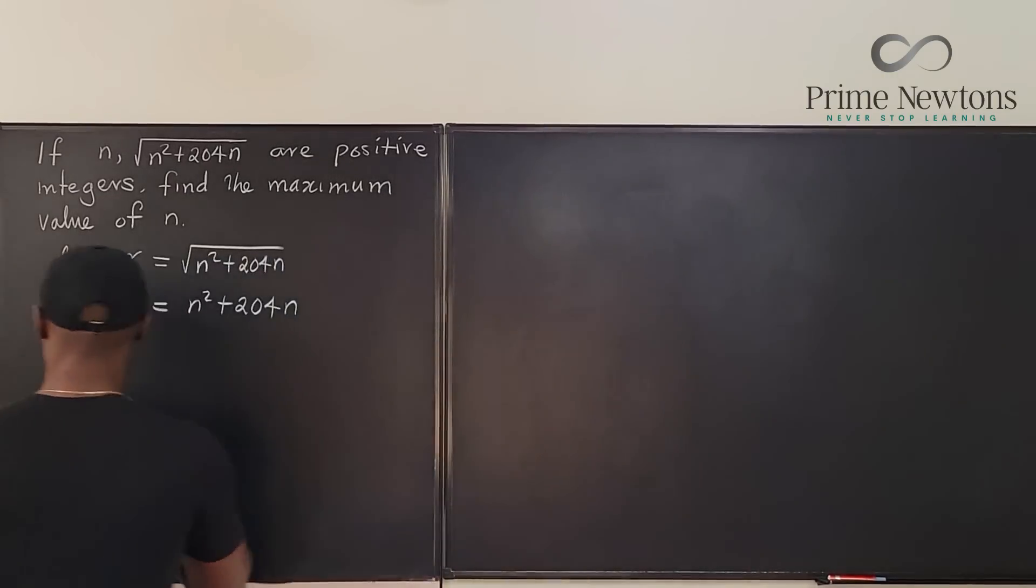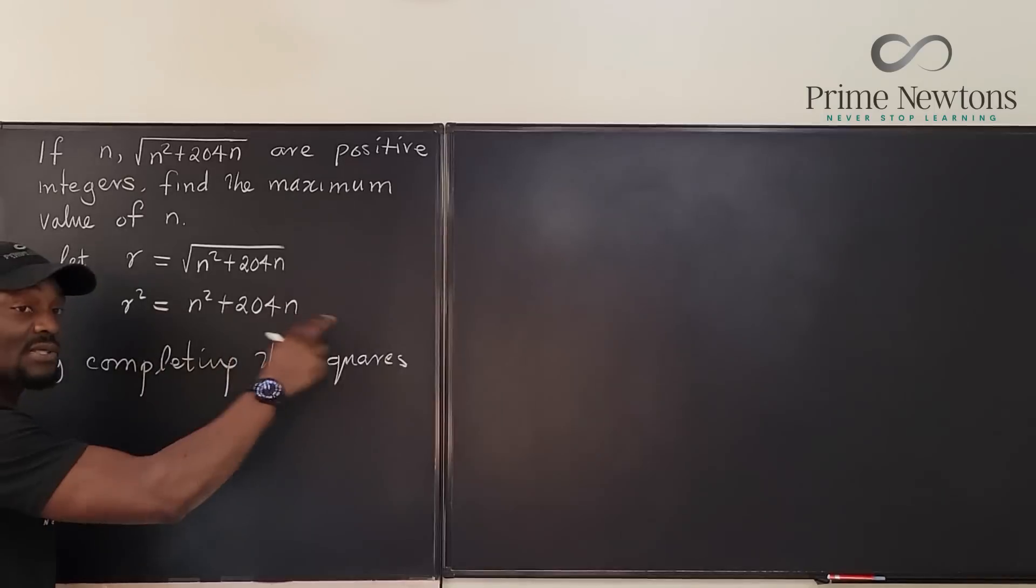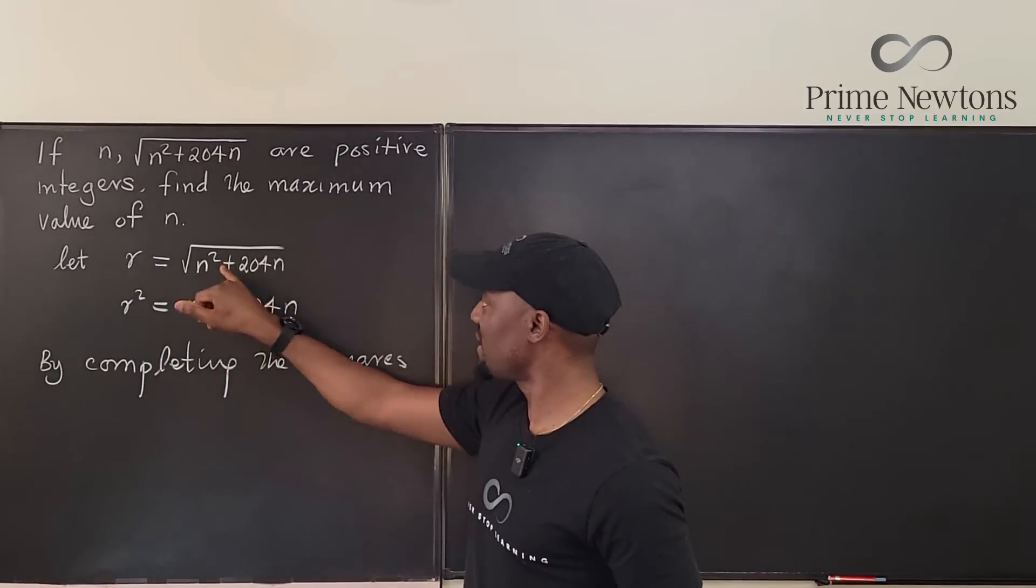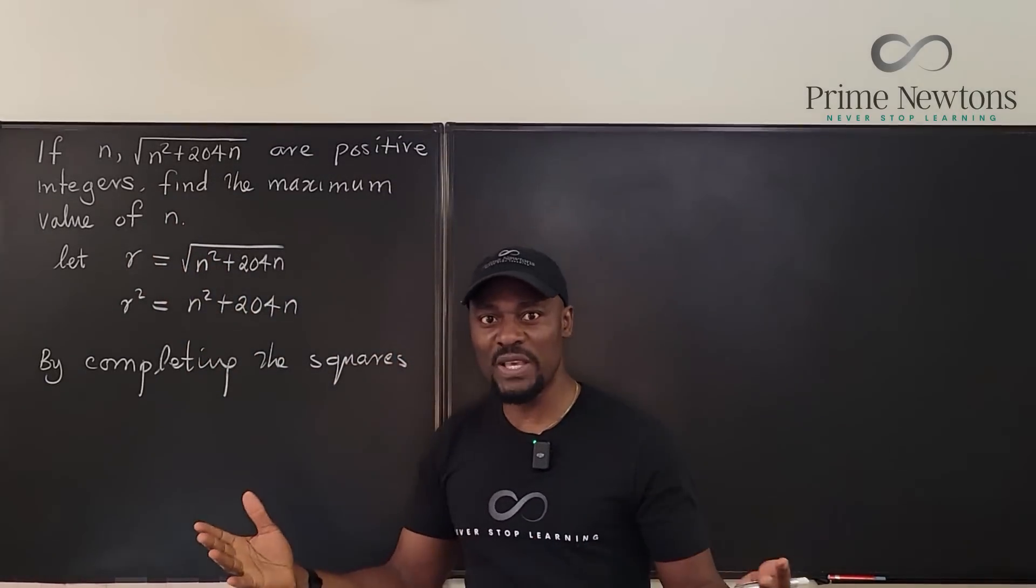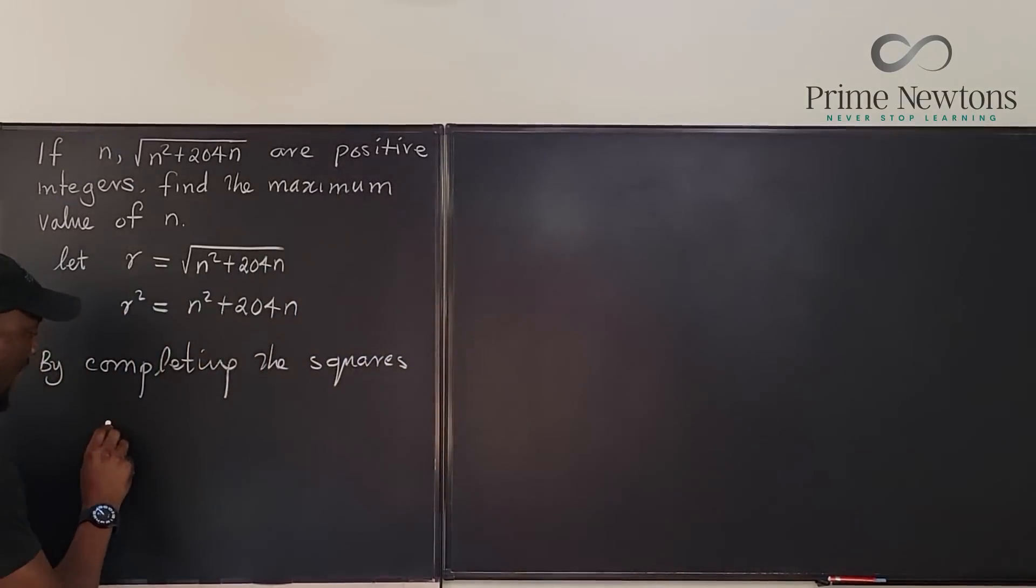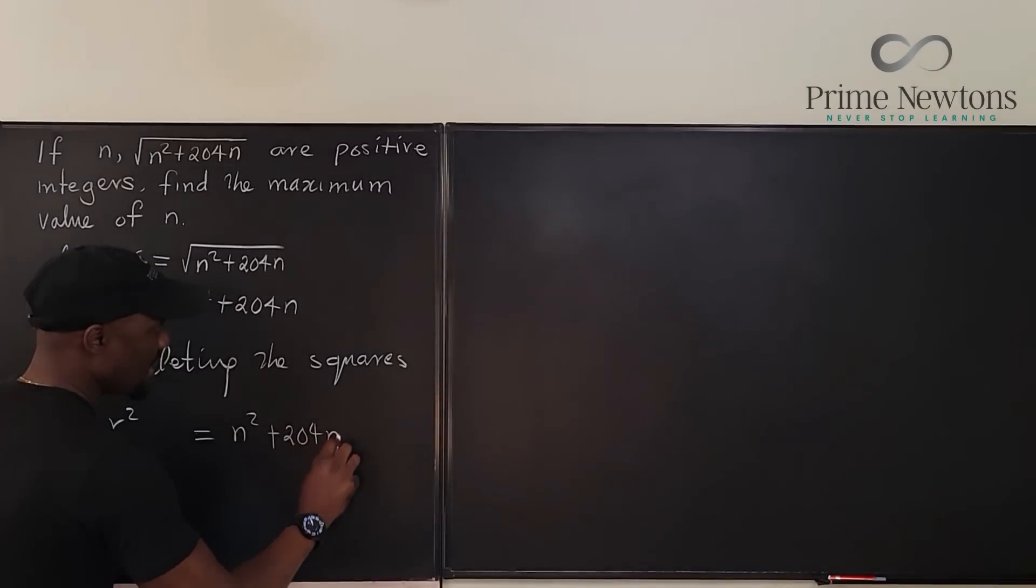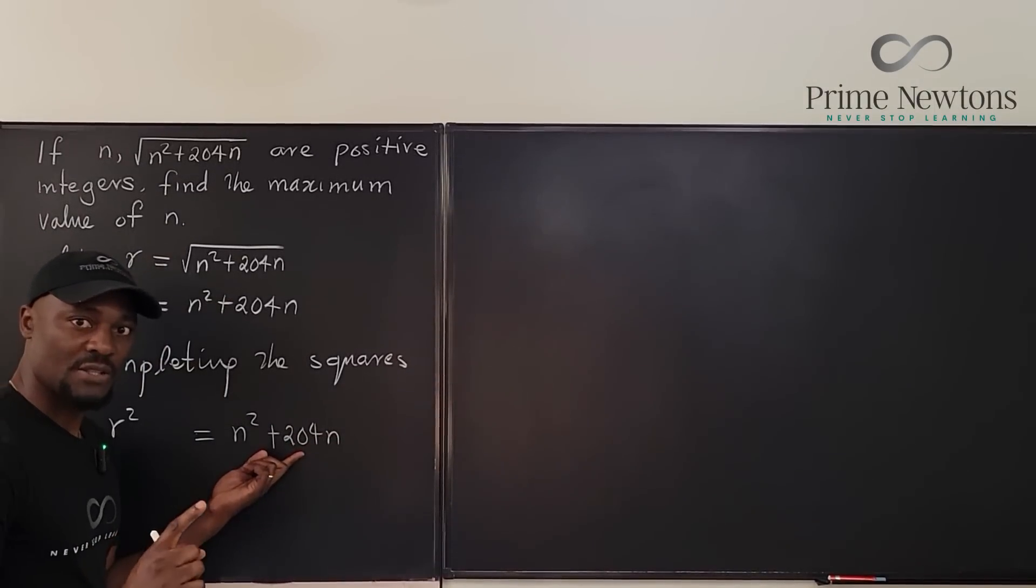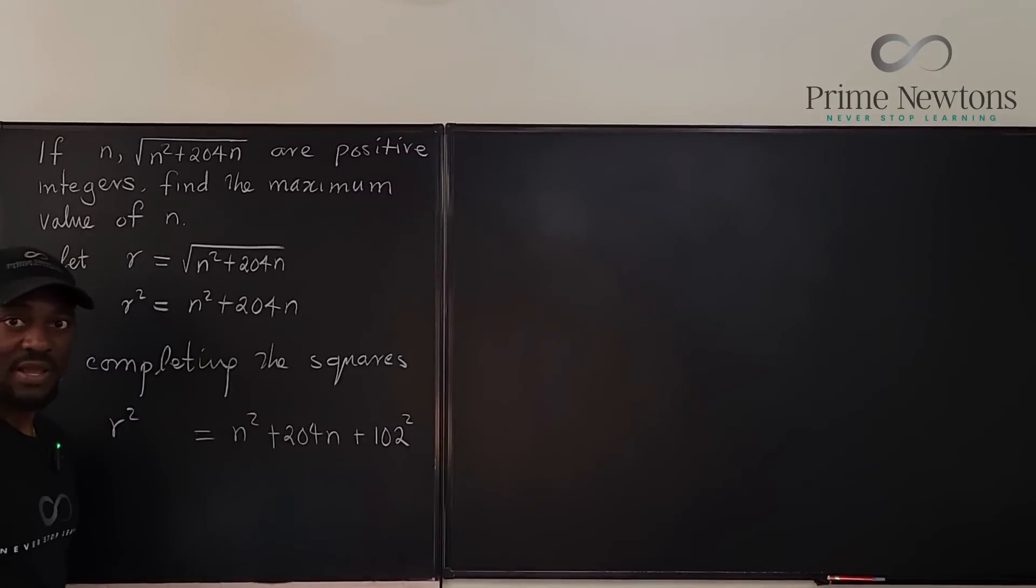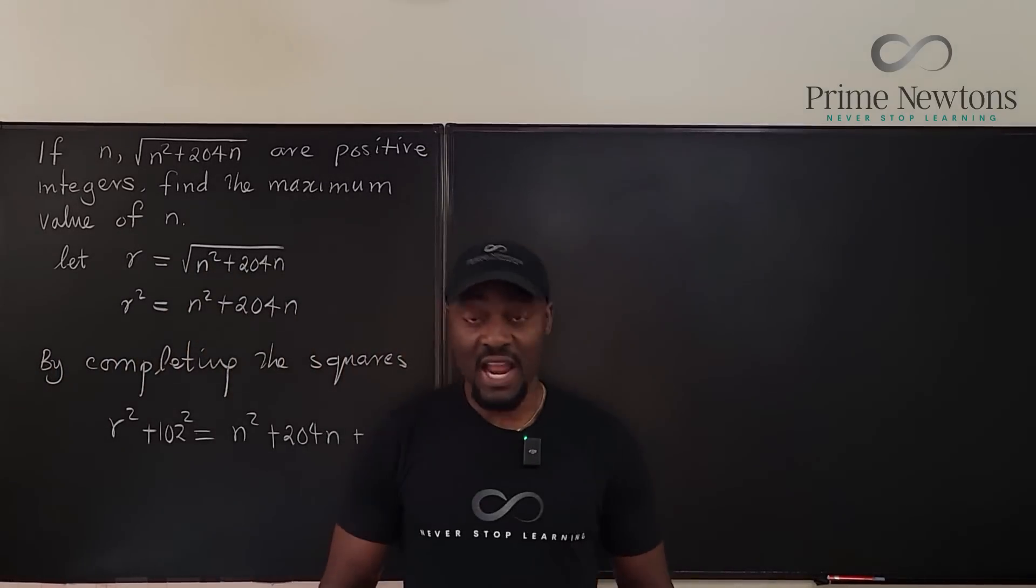So what I could do is complete the square. If I complete the squares on the right, maybe I can express it as the square of a number. And then I can express the left hand side also as a square. By completing the squares, I'm going to divide this coefficient by two and add it to this side. But because this is an equation, I'm going to do the same thing to this side. I'm going to have r squared plus 102 squared equals n squared plus 204n plus 102 squared.